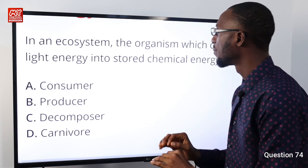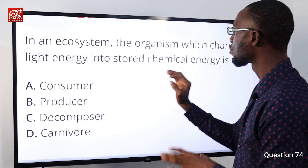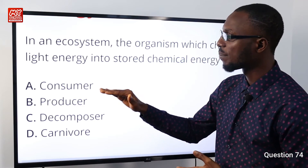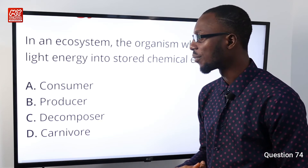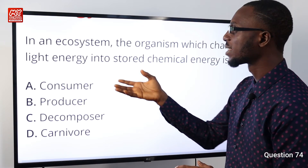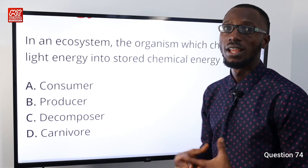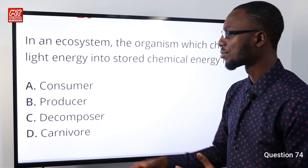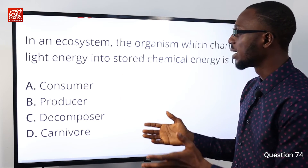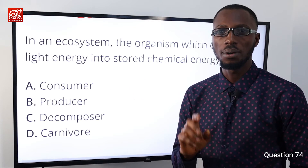Question 74: In an ecosystem, the organism which changes light energy into stored chemical energy — those are the producers, majorly the green plants that contain chlorophyll. They convert light energy into chemical energy, which is a source of food to other organisms in the ecosystem. That makes option B very correct.